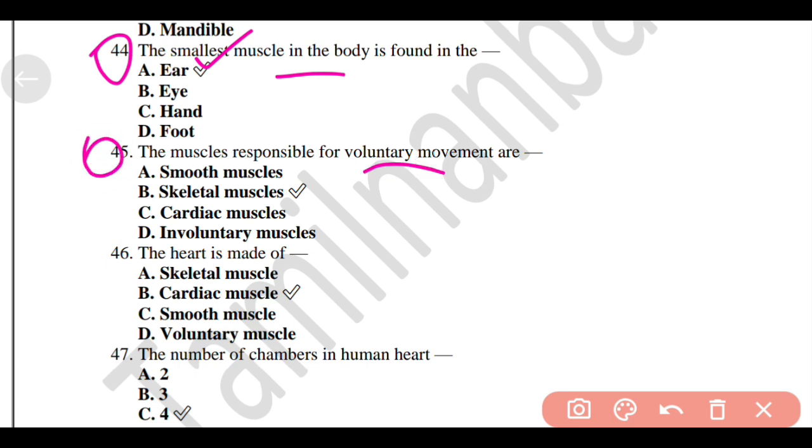The muscles responsible for voluntary movement are Option B, Skeletal muscles. The heart is made of option B, Cardiac muscle.